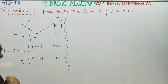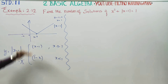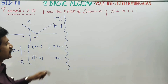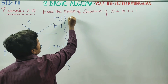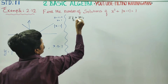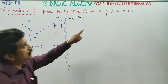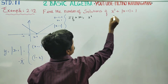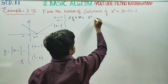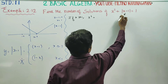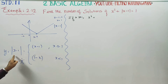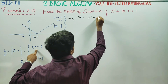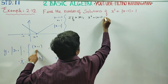Coming to our sum. This is an intro about modulus of x-1. In Case 1, if x is greater than or equal to 1, the equation x² plus modulus of x-1 equals 1 can be written as x² plus (x-1) equals 1.